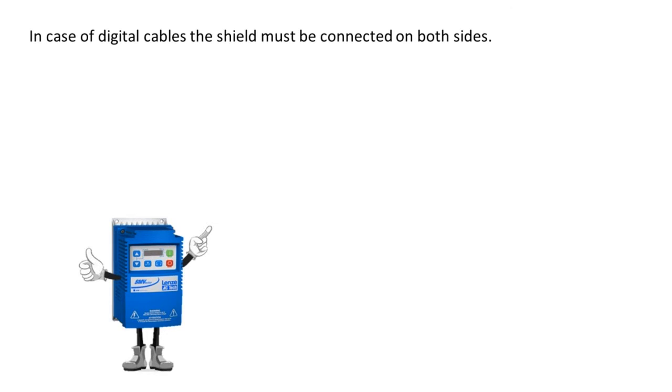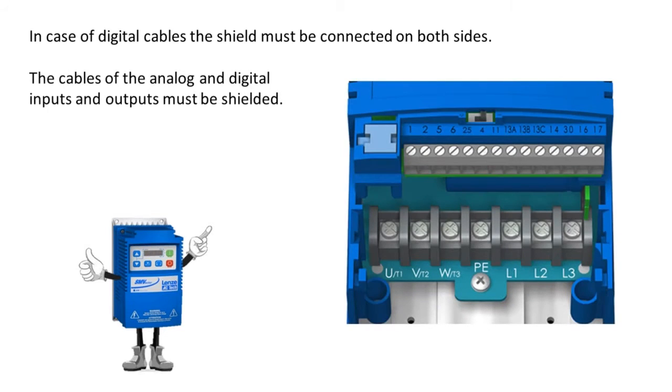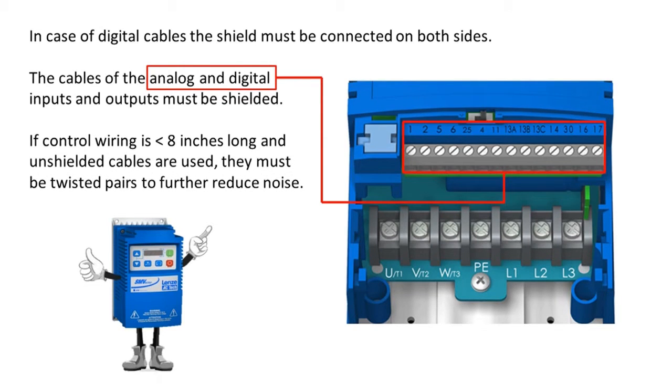The cables for the digital connections must have their shield connected on both sides. The cables of the analog and digital inputs and outputs must be shielded cable. If control wiring is less than eight inches long and unshielded cables are used, they must be used with twisted pairs to further reduce noise.